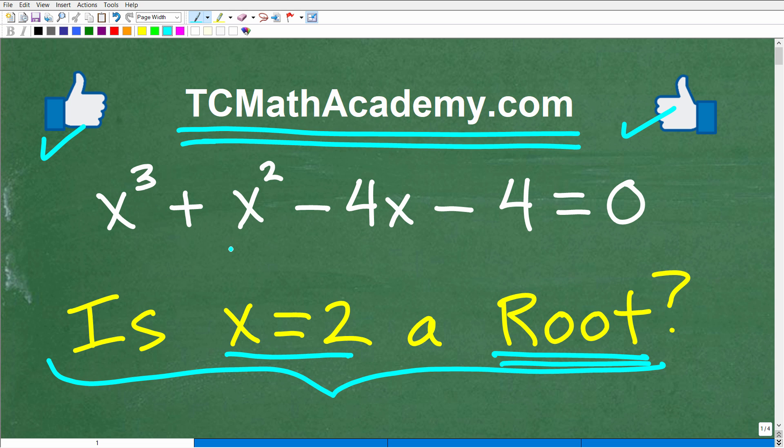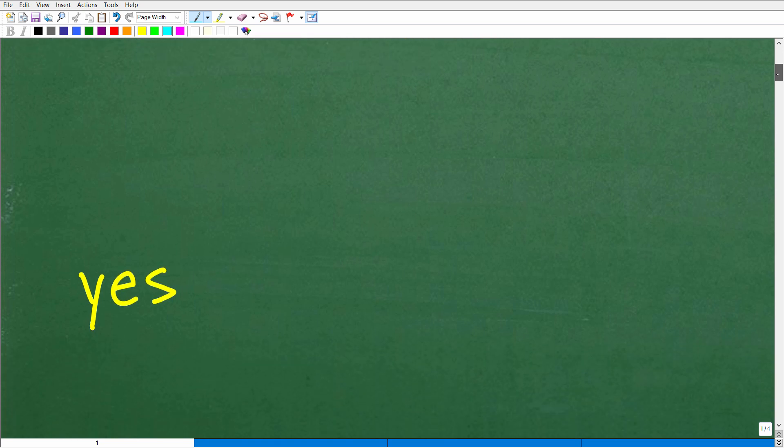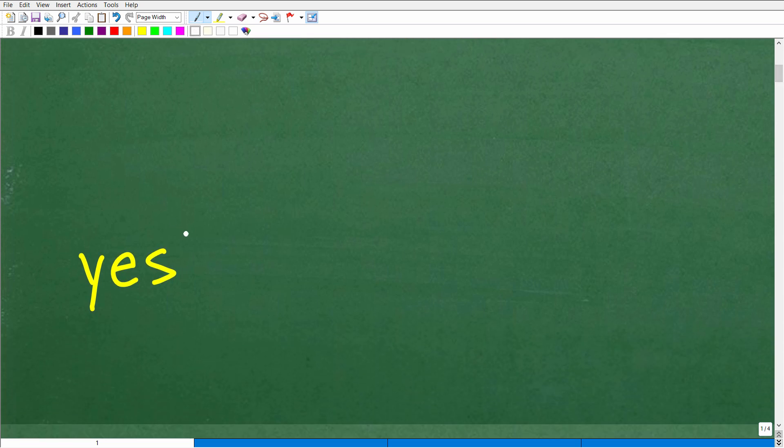Okay, so let's go ahead and take a look at the answer. We've got x cubed plus x squared minus 4x minus 4 equals 0. Is x equal to 2 a root? Well, let's see the answer. The answer is yes, it is. Indeed, x equal to 2 is a root to that polynomial equation.